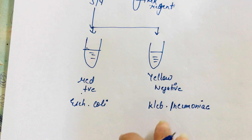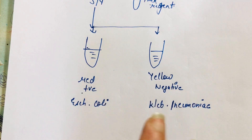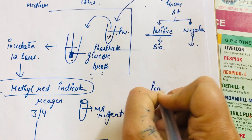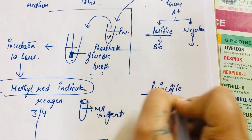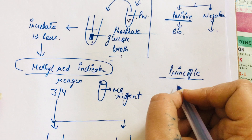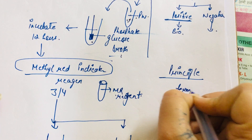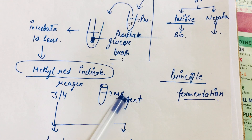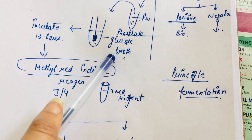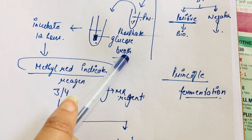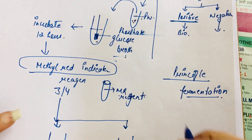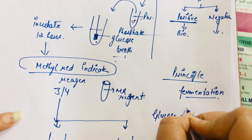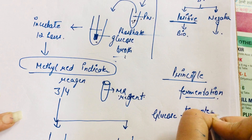If the result is yellow and negative, the person may be suffering from a Klebsiella pneumoniae infection. Now let's discuss the principle. The methyl red test is based on the principle of fermentation. We use phosphate glucose broth as the culture medium, and as the name indicates, glucose is present — and glucose is a sugar that can be fermented.